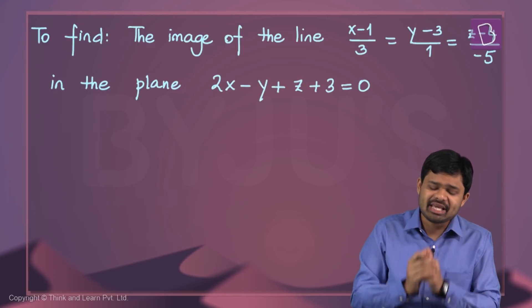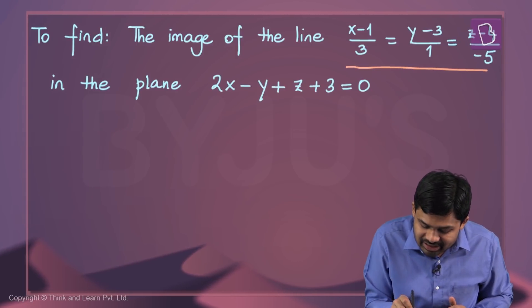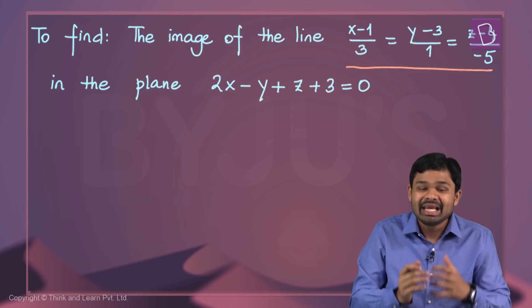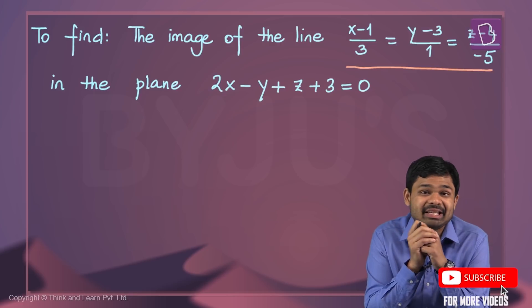Hello friends! Moving on with our discussion on 3D from the ITJE examination point of view, we've now encountered this particular problem. They've asked us to find the image of the line x minus 1 by 3 equals y minus 3 by 1 equals z minus 4 by minus 5, in the plane 2x minus y plus z plus 3 equals 0.